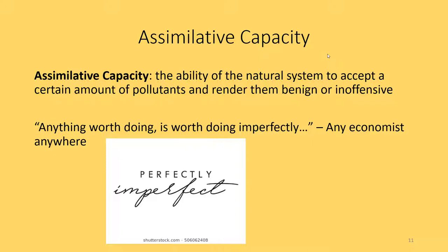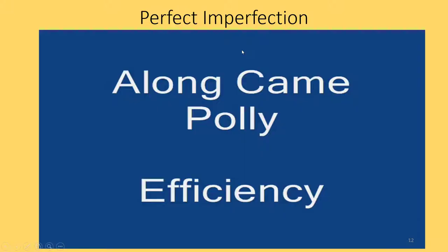Economists are usually about finding an equilibrium — there's a certain amount of something you should be doing, and once you go too far, the costs outweigh the benefits and you want to reduce the activity. To help illustrate this idea, I have a quick video clip from the movie Along Came Polly.